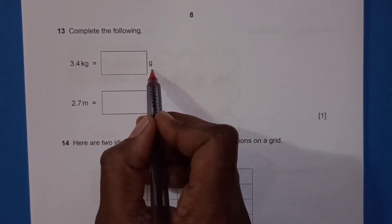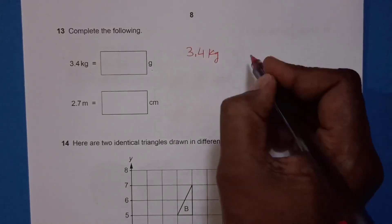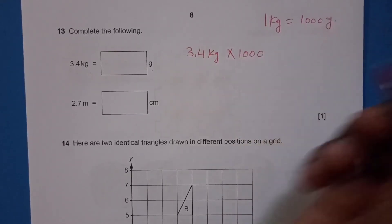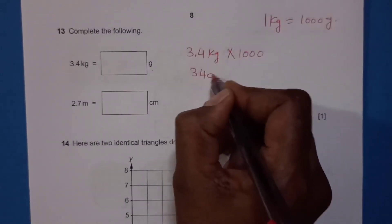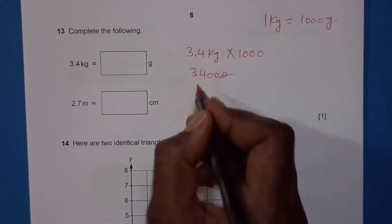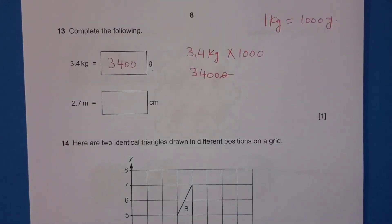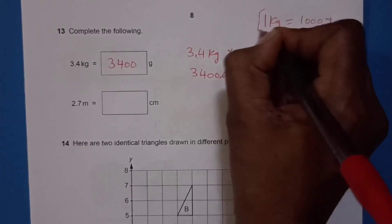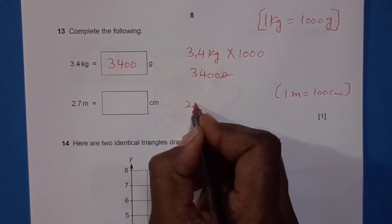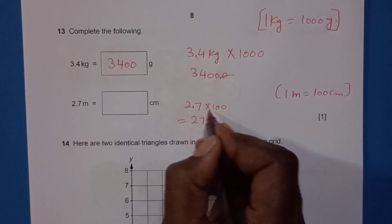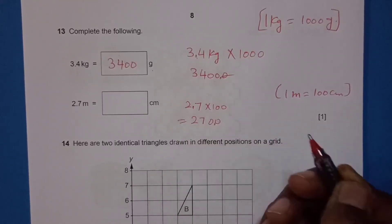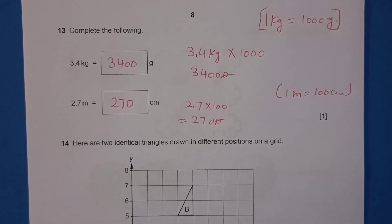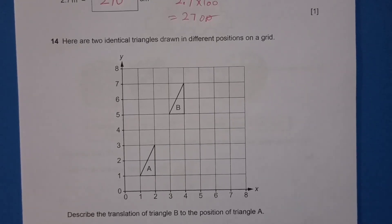Question 13: Complete the following conversions. 3.4 kilograms to grams: multiply by 1000 since 1 kg equals 1000 g. 3.4 times 1000 equals 3400 grams. Next, 2.7 metres to centimetres: multiply by 100 since 1 metre equals 100 centimetres. 2.7 times 100 equals 270 centimetres.